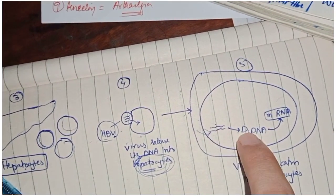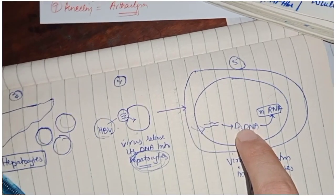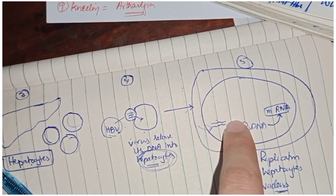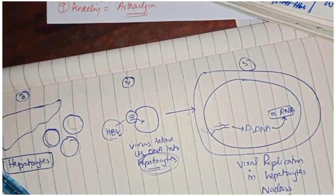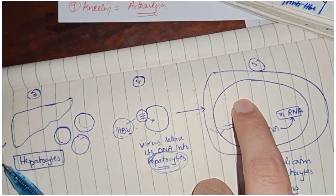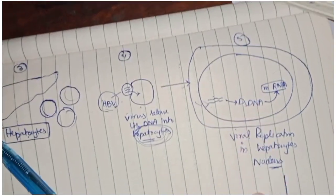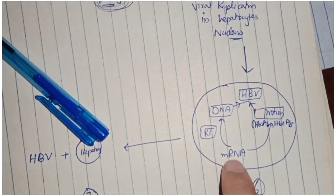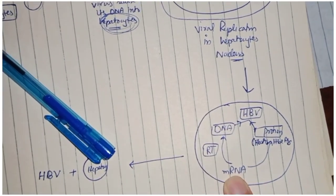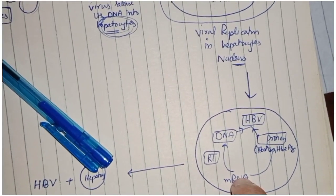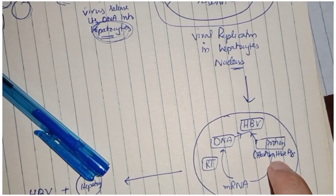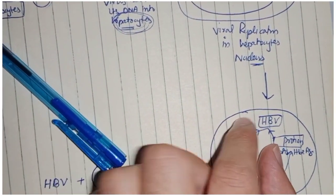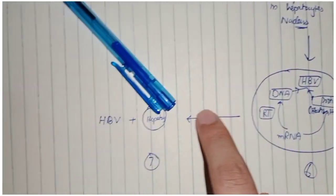The viral DNA is partially double-stranded; it is then converted into a fully double-stranded DNA, which is incorporated into the genome of the hepatocytes. Once incorporated, this genome starts making proteins and DNA for the virus. The viral DNA is transcribed inside the hepatocyte nucleus — viral replication begins. Messenger RNA from viral genome transcription comes into the cytoplasm and is translated, producing hepatitis B surface antigen, hepatitis B E antigen, and DNA via reverse transcriptase. These recombine to form new viral particles, which are then released.